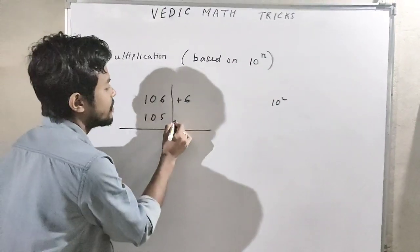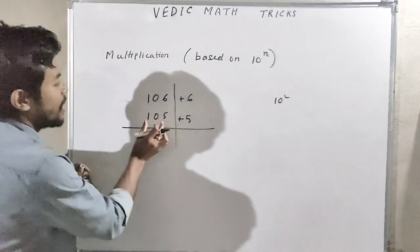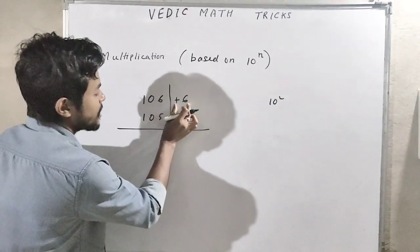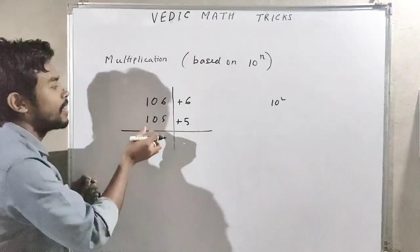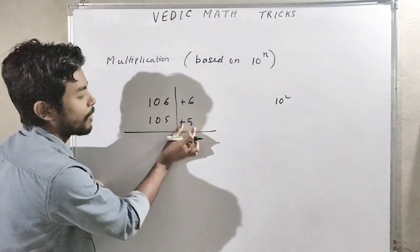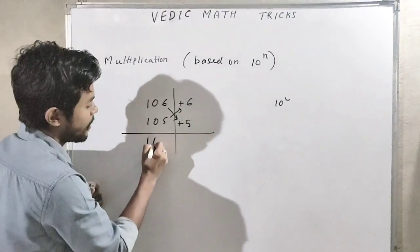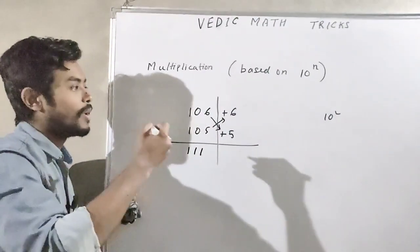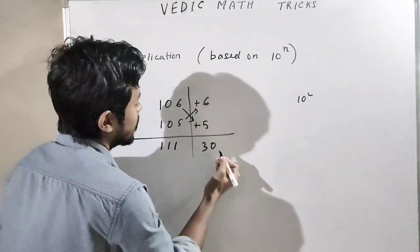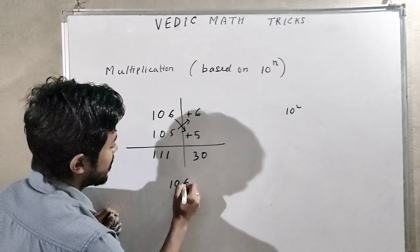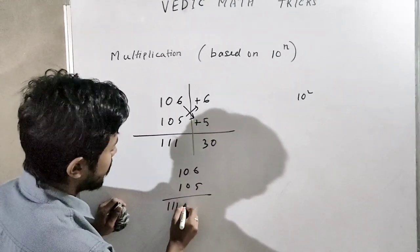Now here also we consider base as n squared or 100. Now 106 is how much more than 100? That is plus 6. And 105 is 5 more than 100. Now 105 plus 6, what will you get? 111. Here we write triple 1. Now 5 times 6 is 30. So 106 into 105 is 11130.